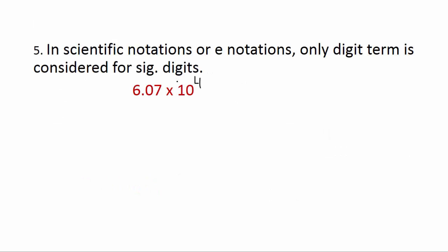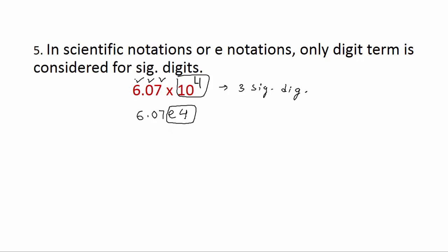In scientific notation or e-notation, for example 6.07e4, we write the same thing this way. Here only the digit term is considered for significant digits — we do not consider the exponent term. So 6.07 — all three digits are significant, giving it 3 significant digits. The exponent 4 is not counted, so 6.07 has 3 significant digits.